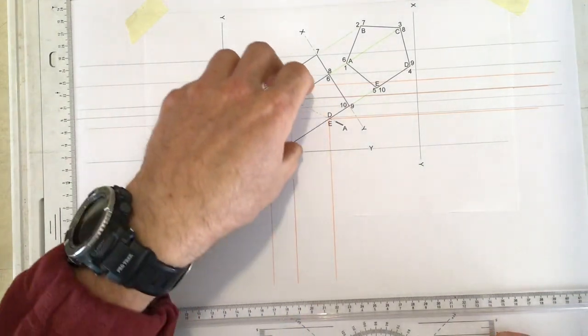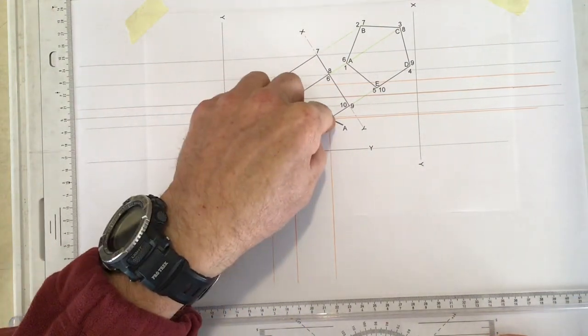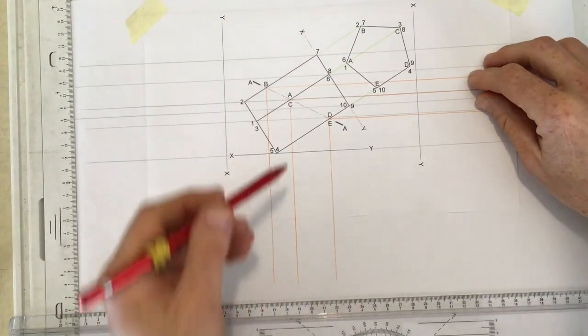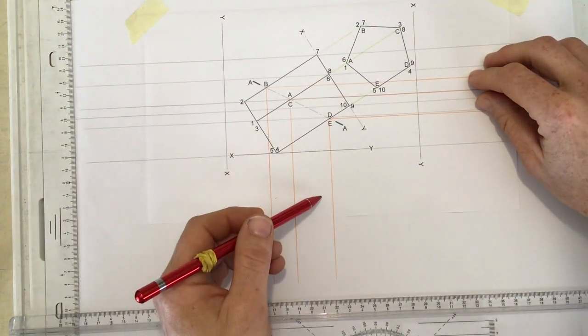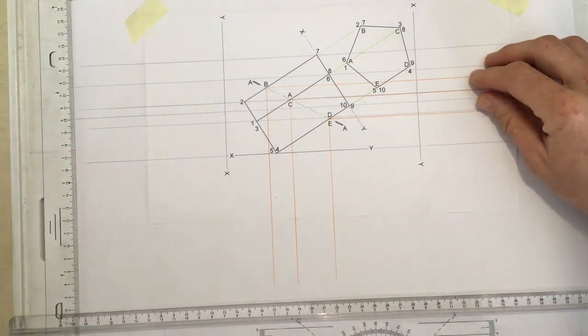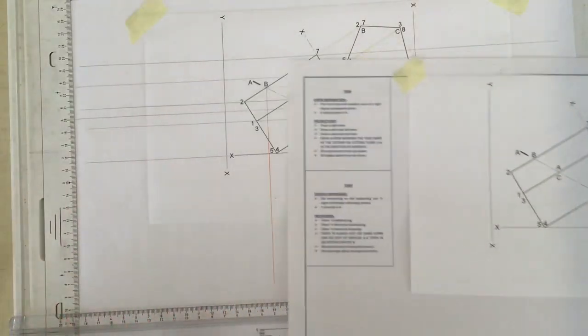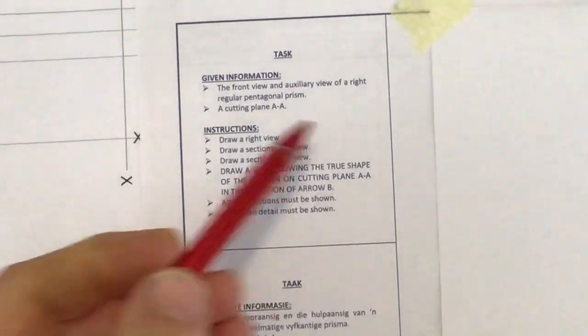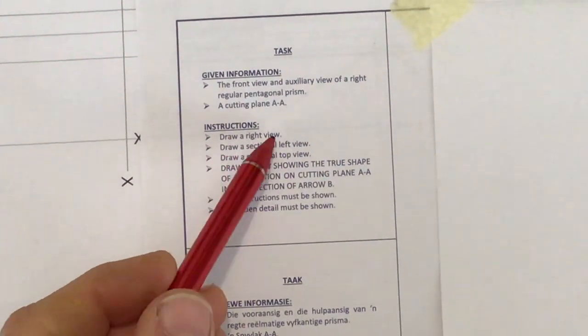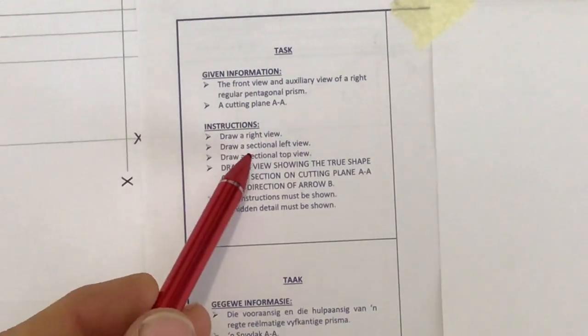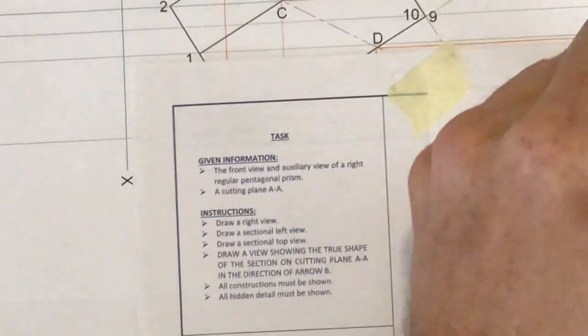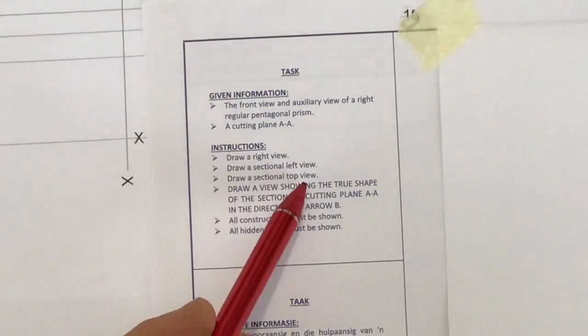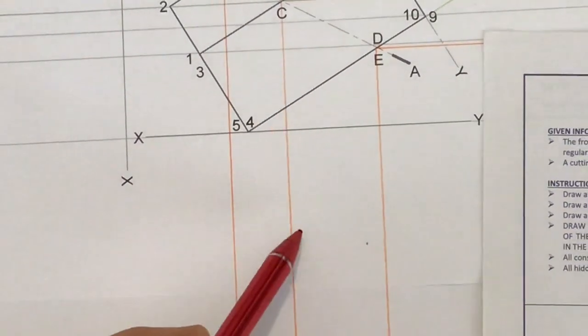What I'm going to do first is transfer the cutting plane onto my left view, which is going to be placed over here, and onto my top view over here. If you look at the question carefully, they say to you that you are to draw a right view with no sectioning. They say draw a sectional left view, that's why I'm going to draw the cutting plane there. They say draw a sectional top view, that's why I'm going to draw the cutting plane over there.